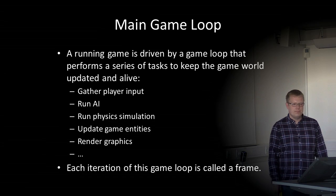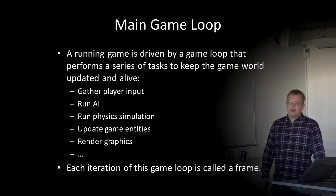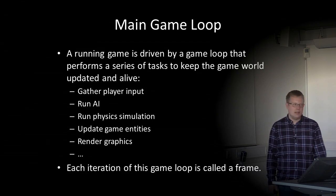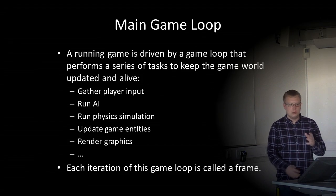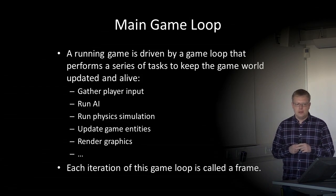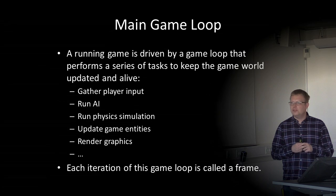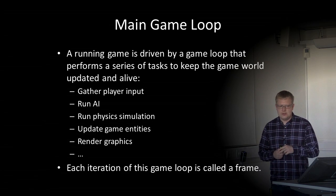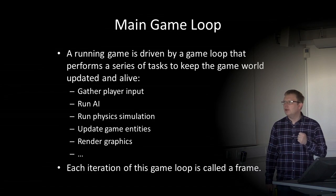The main game loop is essential when playing the actual game — a running game is driven by a game loop. The game loop performs a series of tasks to keep the game world updated: gather player input from keyboard, mouse, gamepad, or whatever; run AI code to decide what computer-controlled characters do; run physics simulation; update all game entities' positions and states; and render graphics. Each iteration of this loop is called a frame or game frame.